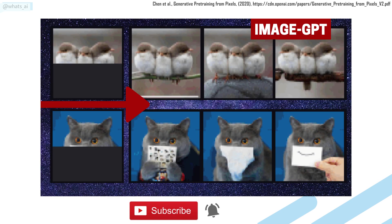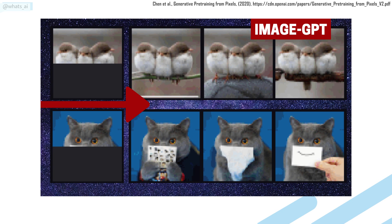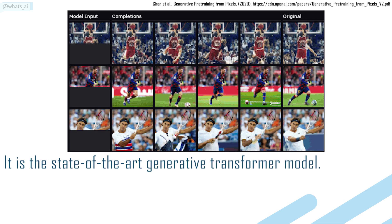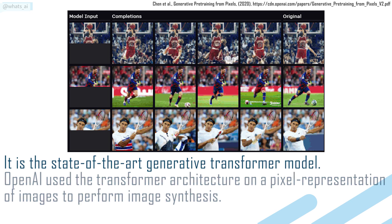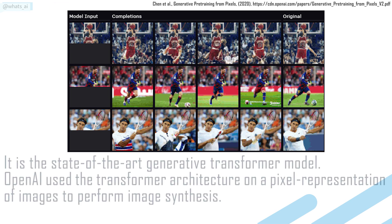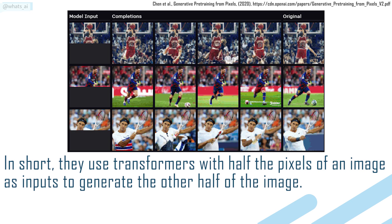You've probably heard of IGPT or ImageGPT, recently published by OpenAI, which I covered on my channel. It's the state-of-the-art generative transformer model. OpenAI use the transformer architecture on a pixel representation of images to perform image synthesis. In short, they use transformers with half the pixels of an image as inputs to generate the other half of the image. As you can see here, it is extremely powerful.